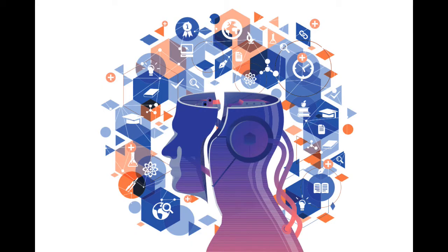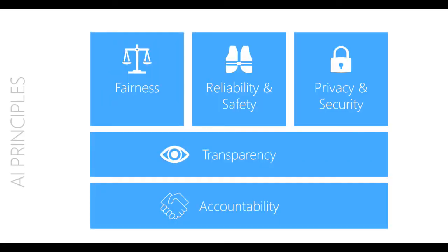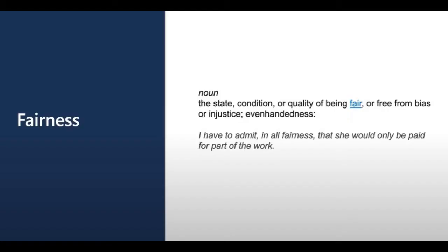In many institutions, like Microsoft for example, AI software development is guided by a set of six principles designed to ensure that AI applications provide workable solutions to different problems without any unintended negative consequences. These six principles are: fairness, reliability and safety, privacy and security, inclusiveness, transparency, and accountability.